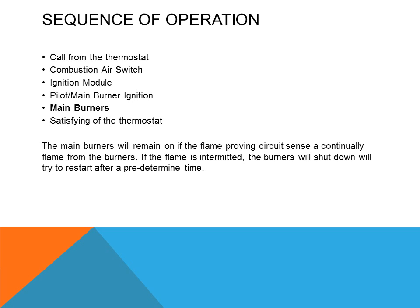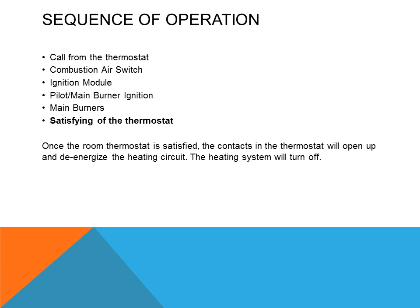Most newer furnaces will try at least three times, and after the third time the unit will lock itself out and will not restart unless the power is de-energized from the control circuit. Once the room thermostat is satisfied — in other words, the room has reached the correct temperature — the thermostat will open its contacts and de-energize the heating circuit, and the heating system will turn off.